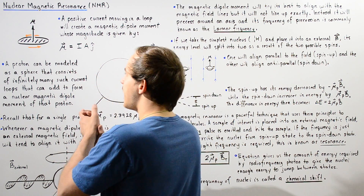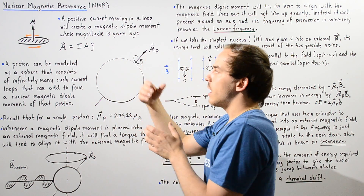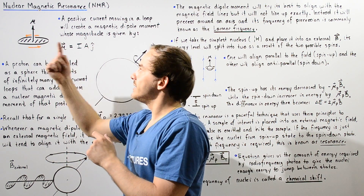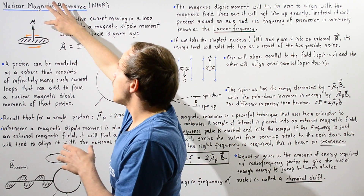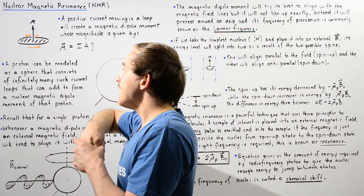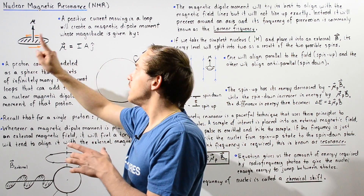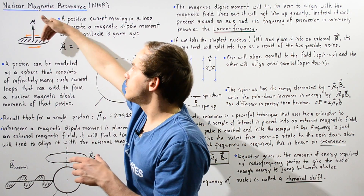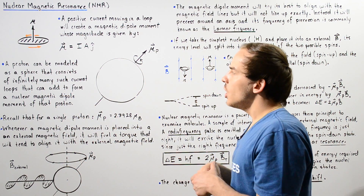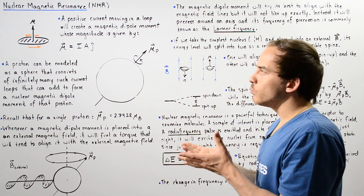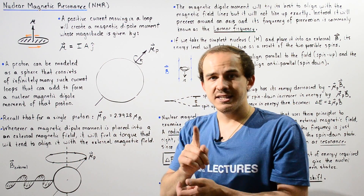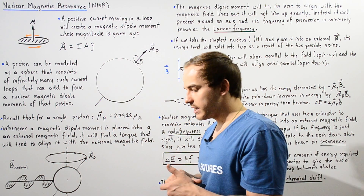For this particular case, because our current is positive and points counterclockwise, our mu — the magnetic dipole moment — will point upward. If the current was negative and moved counterclockwise, mu will point downward. So anytime we have area A, our mu points perpendicular with respect to that area A.